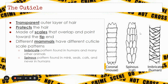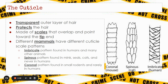The spinous pattern is found on mink, seals, and cats, but never found on humans — we will never have a human with this spinous trait. It's more for animals with a greasy or almost waterproof coating. The coronal pattern is found in small rodents like mice, but it can rarely be found in humans. So just because we see coronal we can't eliminate humans as a possibility, but it is rare.